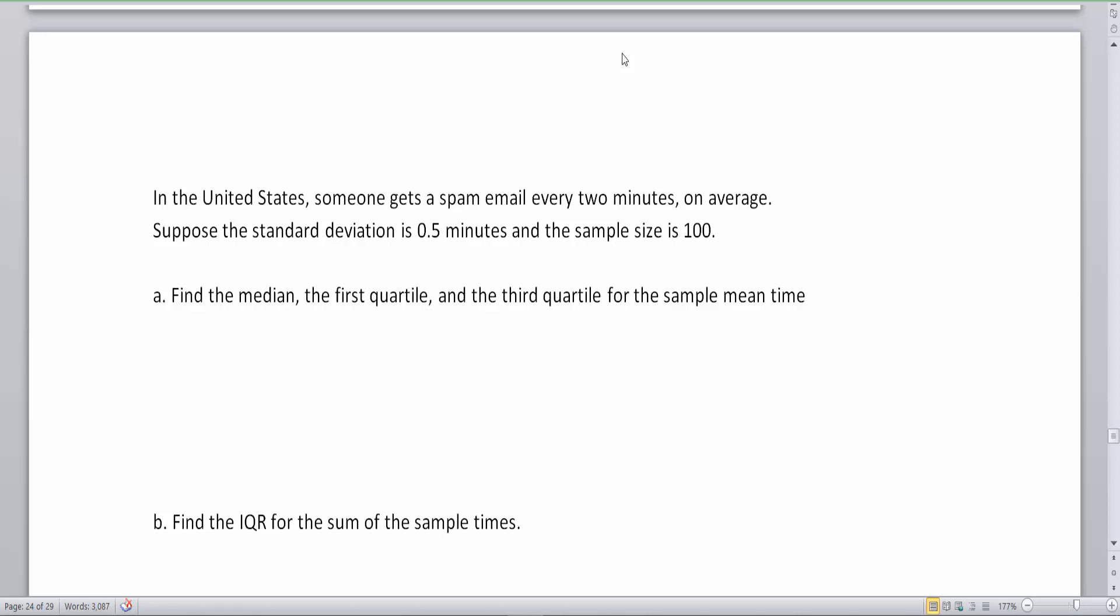At the end of this video, we'll have a nice review of everything we've learned so far in this chapter and the previous one and how you would easily use your calculator to solve it. For this problem we have in the United States someone gets a spam every two minutes on average. So here's our mu. Suppose that the standard deviation is 0.5 minutes and the sample size is 100. So here's our n and here is our standard deviation.